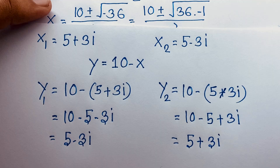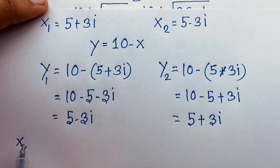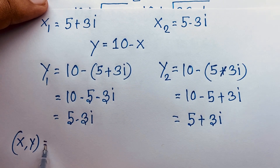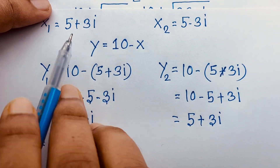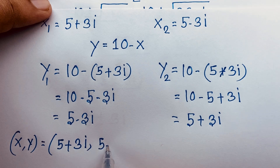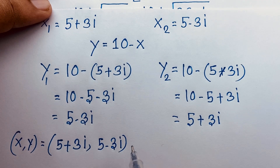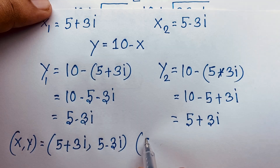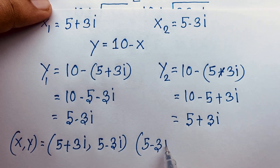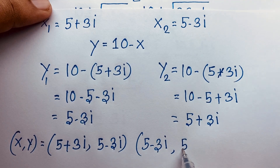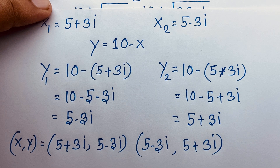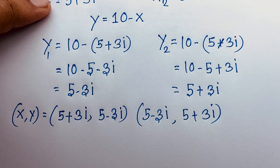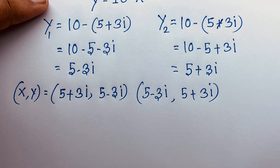So our final answer: when x is equal to 5 plus 3i, y is equal to 5 minus 3i; and when x is equal to 5 minus 3i, y is equal to 5 plus 3i. This is our final answer to this math Olympiad question. Both values are complex numbers — there is no real solution.